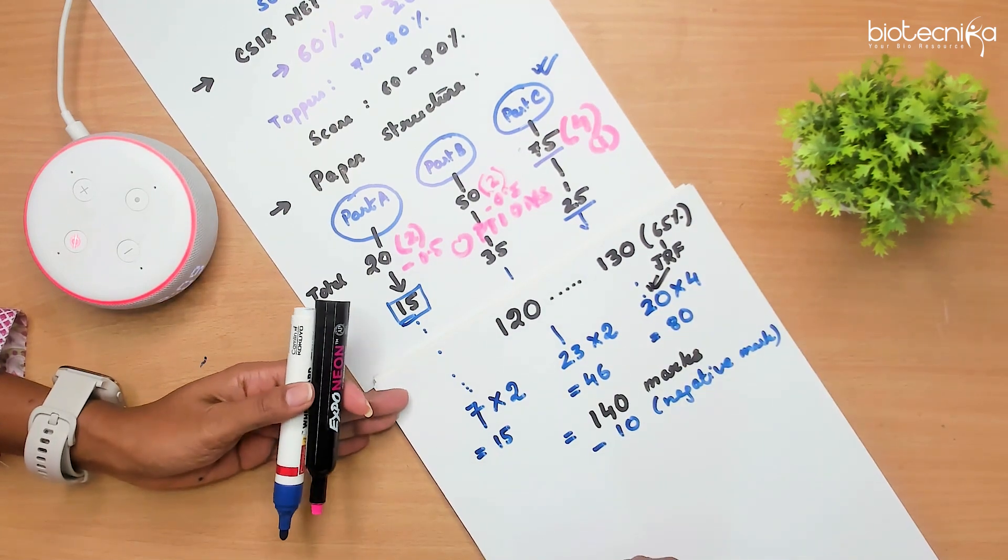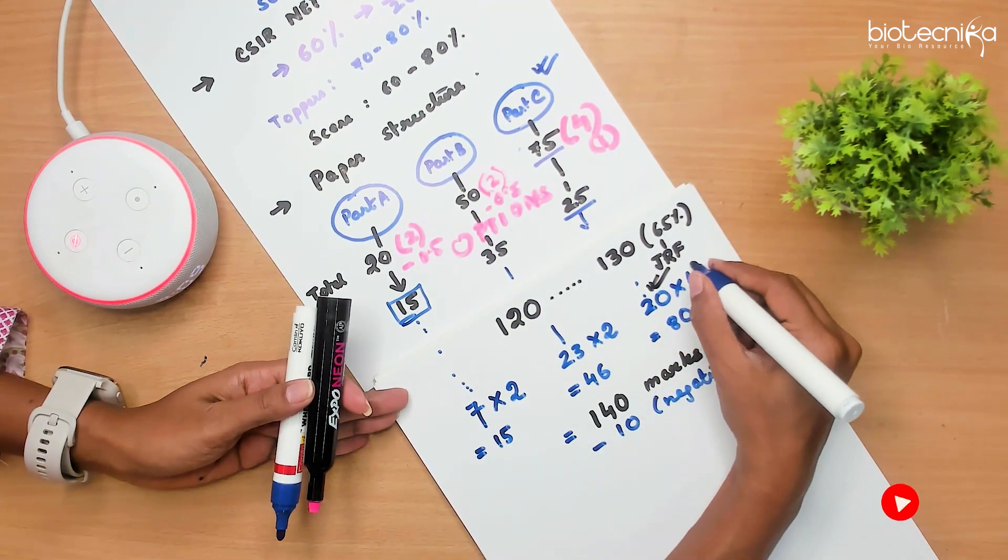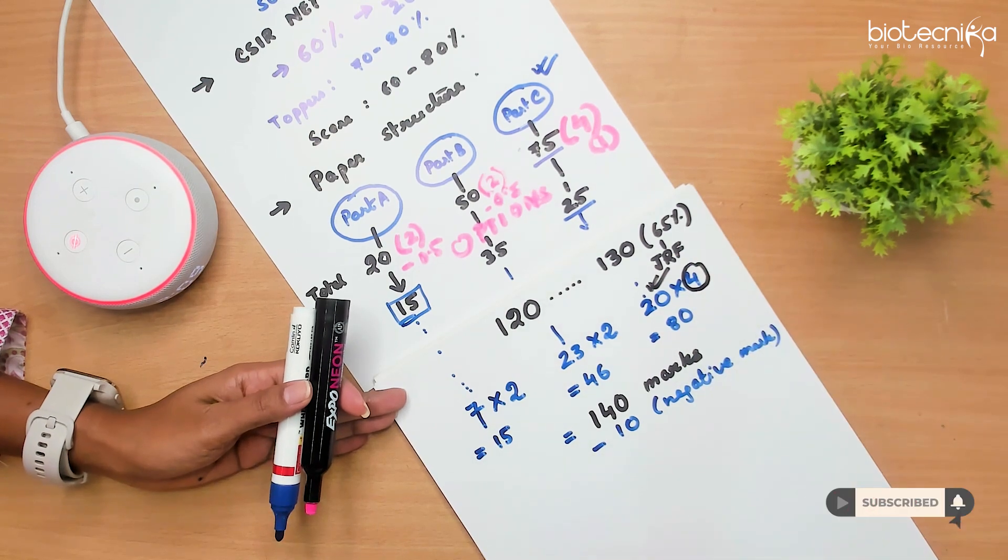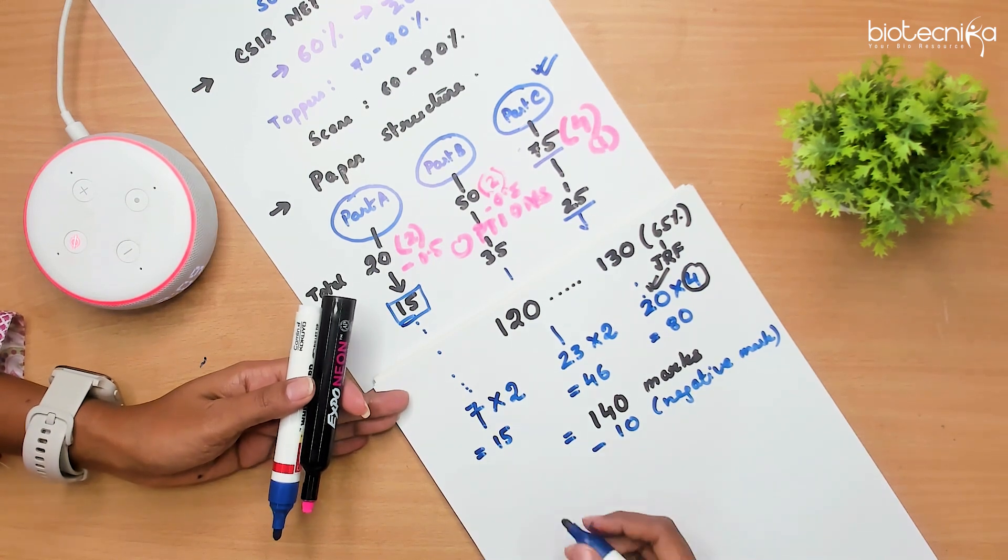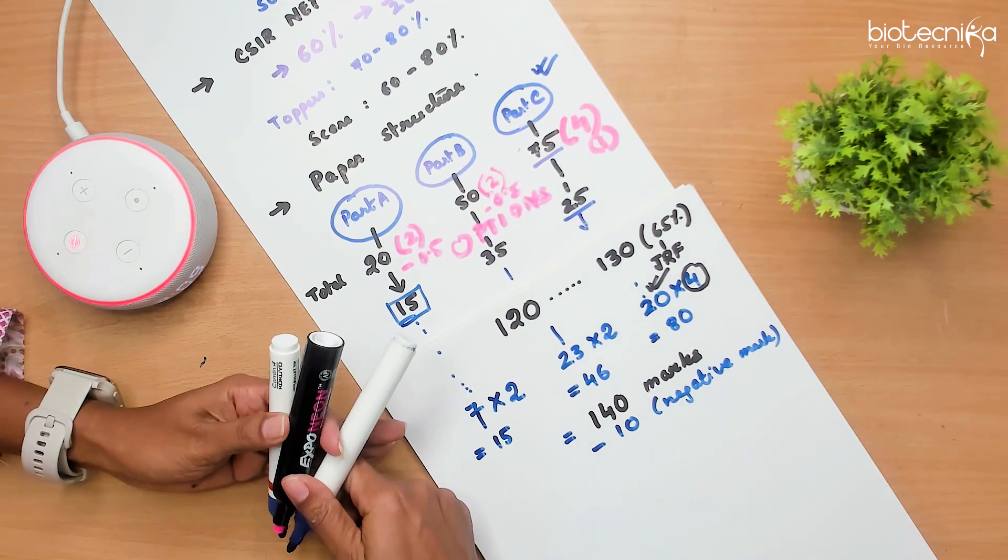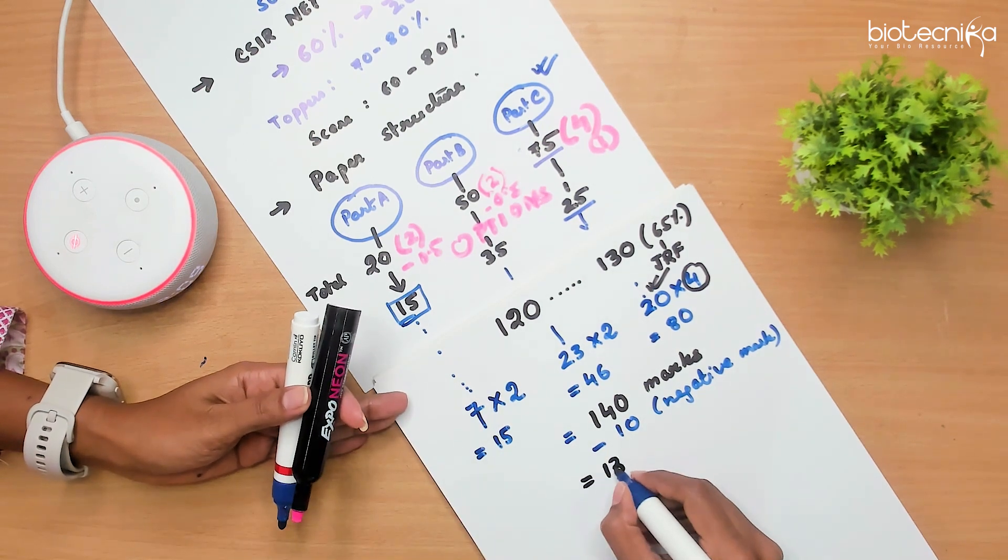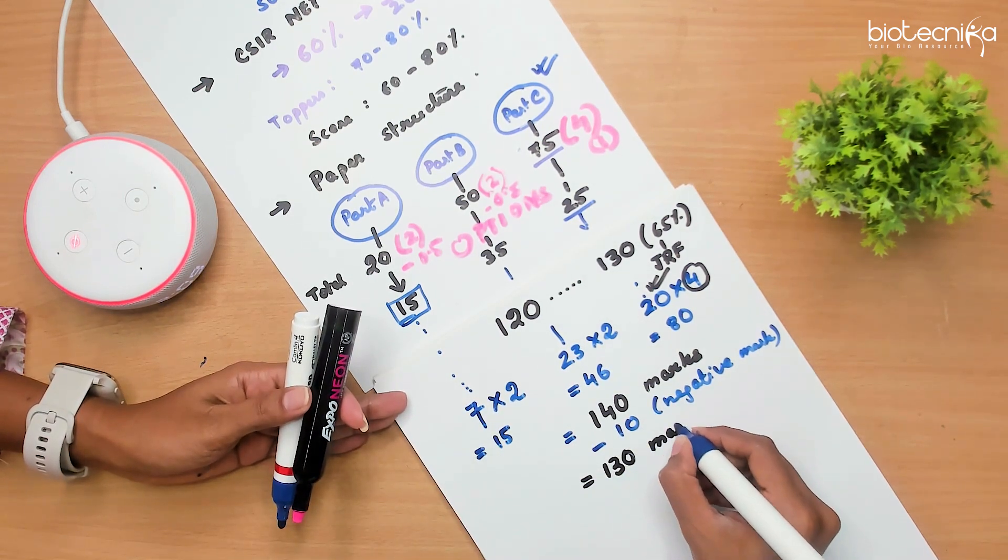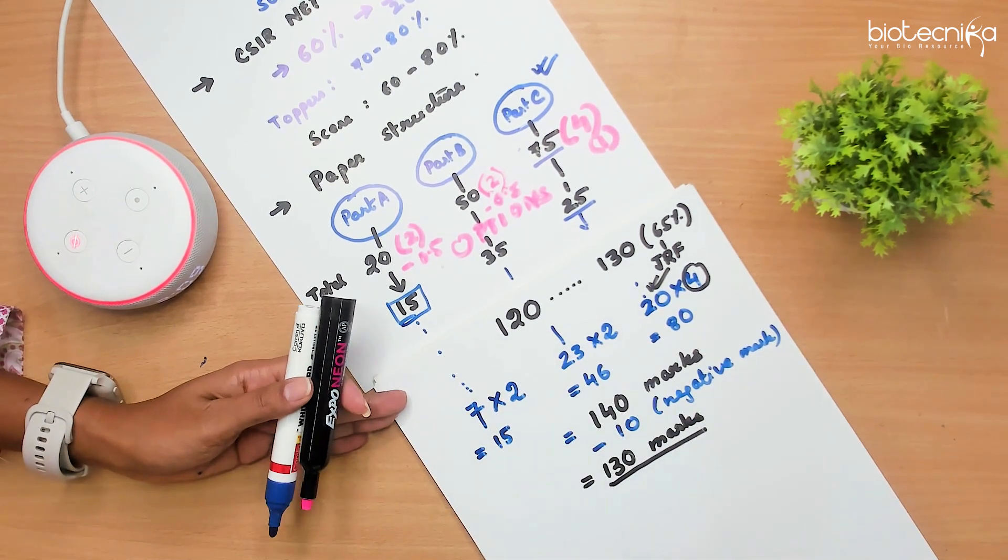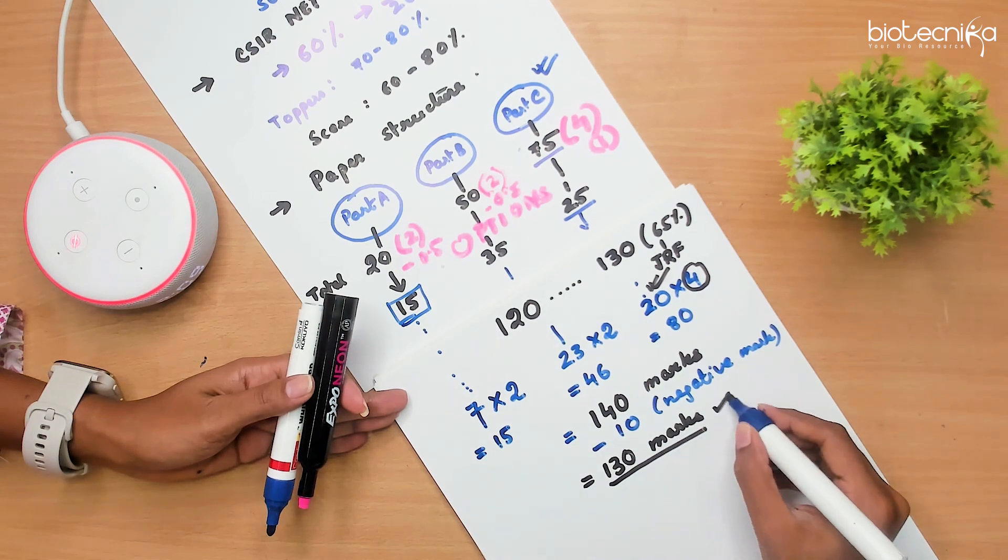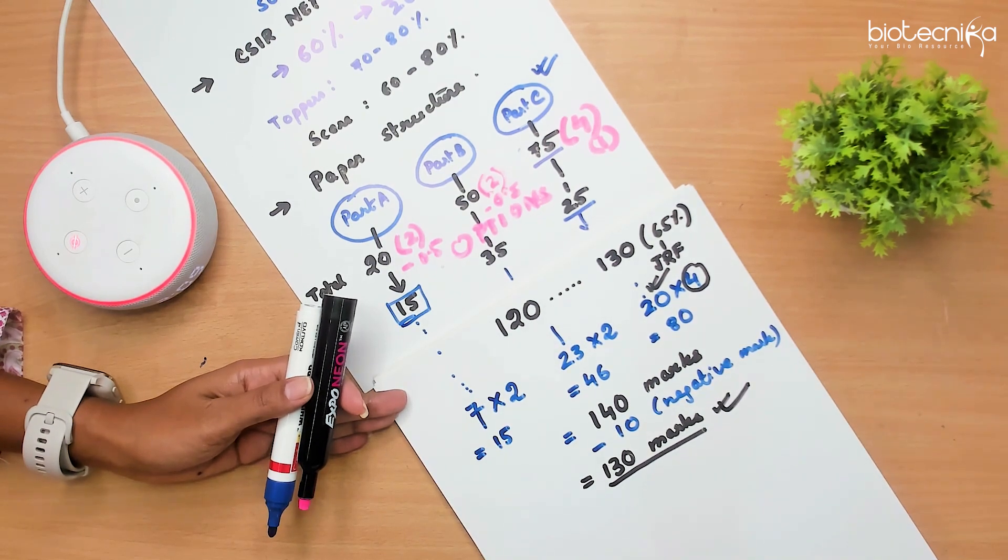That is why I have given you to solve only 20 questions. You should not make more mistakes in Part C because each correct answer is worth 4 marks. The more you answer till the limit of 25, it will be much better for you. So, as you can see with this, you can easily score 130 marks, which is 65% of the target. So, definitely with 60% you can qualify JRF, but still with 130 marks, you are good to go.